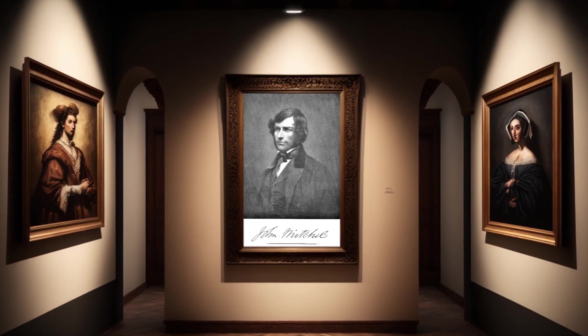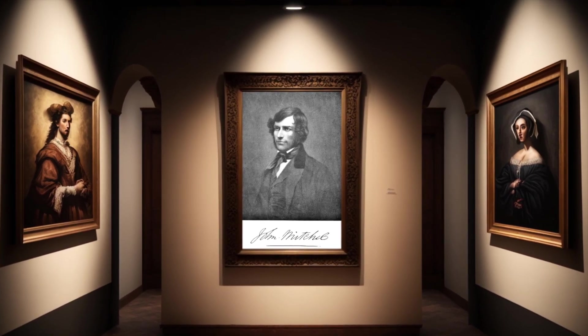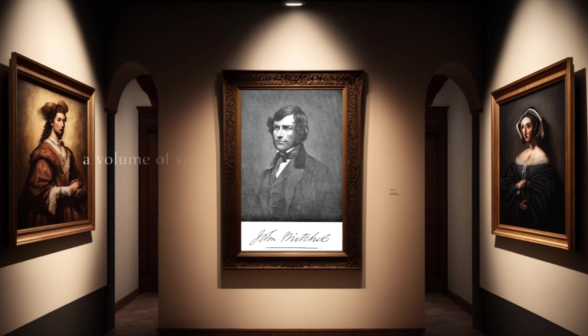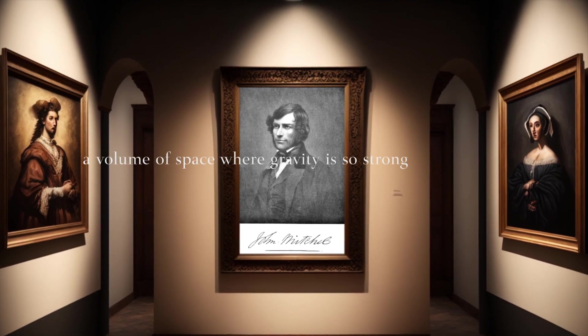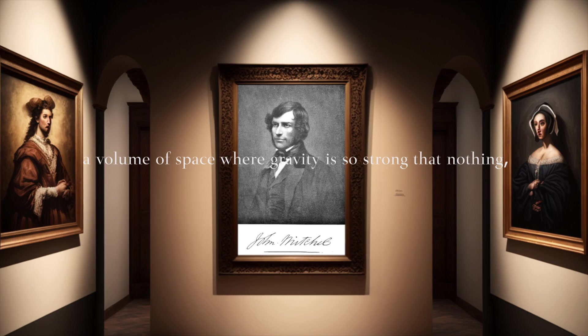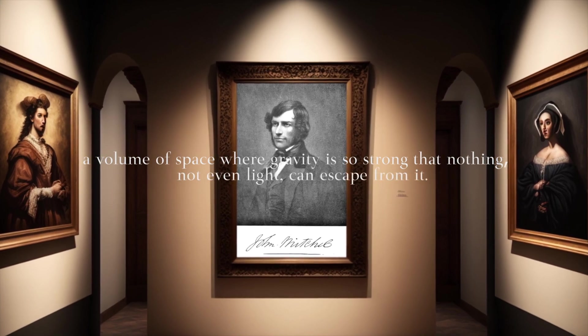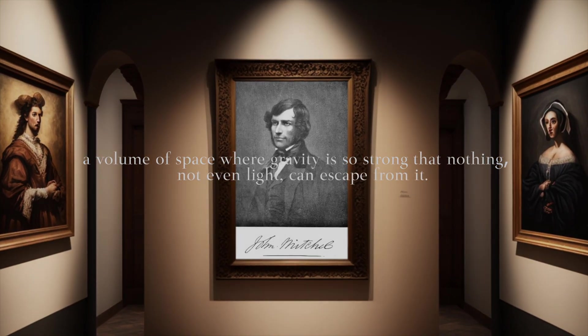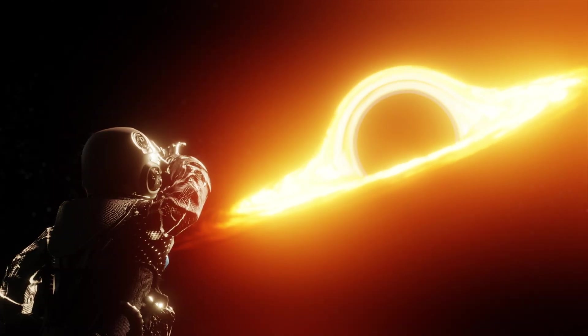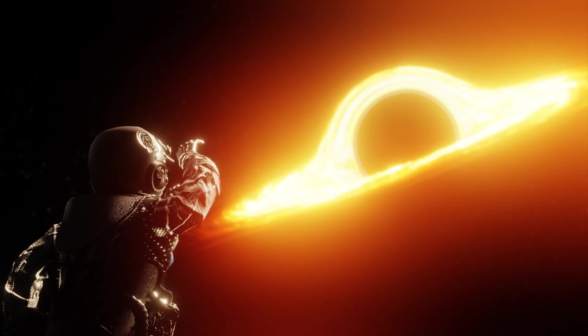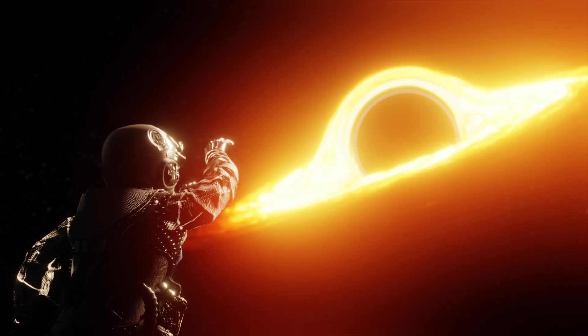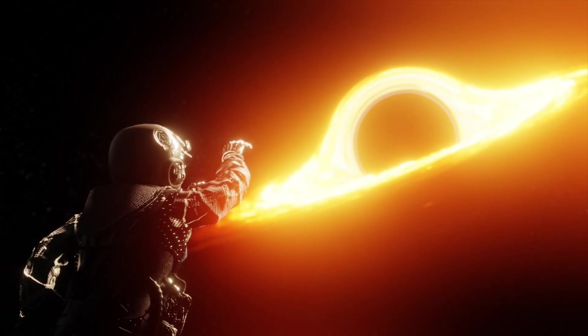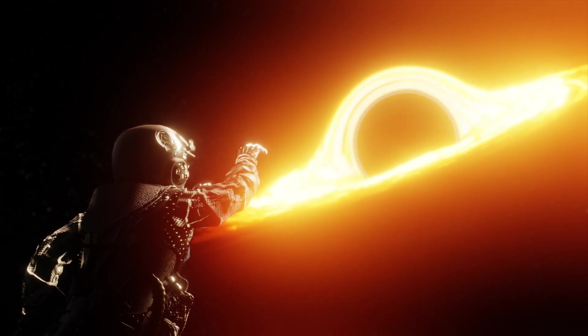After a black hole is formed, it can grow by absorbing mass from its surroundings. In 1783, geologist John Mitchell, known as the father of black holes, first described a black hole as a volume of space where gravity is so strong that nothing, not even light, can escape from it. He thought that the speed required to overcome gravity exceeds the speed of light.